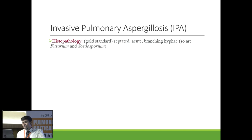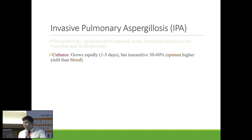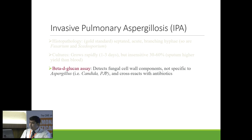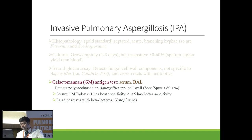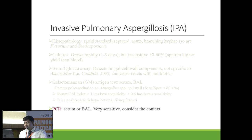On histopathology, it shows septated acute-angle branching hyphae. Culture grows rapidly but is insensitive; sputum has higher yield than blood, so sputum samples must be sent. Beta-D-glucan assay will be positive as it is a fungal cell wall component, but it is not specific — it cross-reacts with Candida, PCP, and beta-lactam antibiotics. Galactomannan antigen test can be done in serum or BAL: serum galactomannan index >1 has high specificity, >0.5 has better sensitivity; BAL galactomannan threshold is 0.67. Galactomannan can also be positive with beta-lactams and Histoplasma infections. PCR with serum or BAL is again very sensitive.